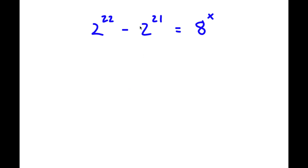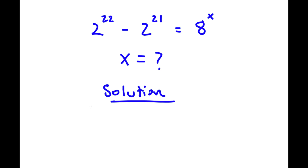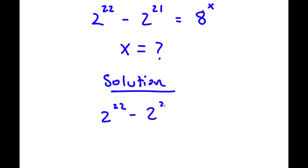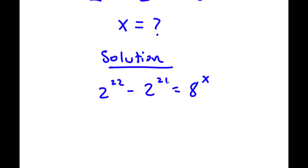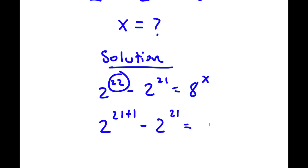In this problem, I have 2 to the power of 22 minus 2 to the power of 21 is equal to 8 to the power of x. It looks complicated, but it's actually easier than you might think. I rewrite 22 as 21 plus 1, so this becomes 2 to the power of 21 plus 1 minus 2 to the power of 21 is equal to 8 to the power of x.